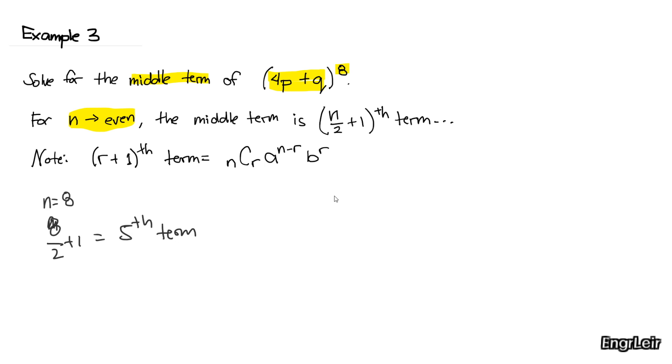And remember that the r plus 1 term is this equation. So r is equal to 4. Since it's the 5th term, r plus 1 term, your r is 4.